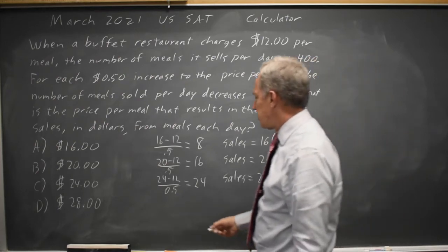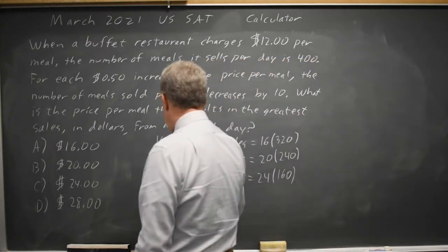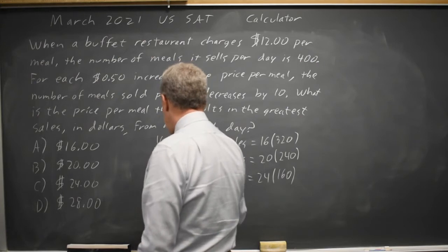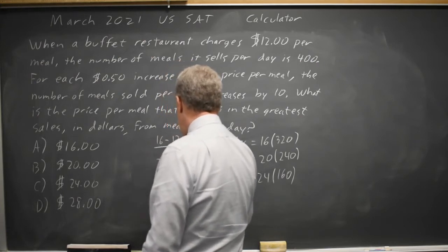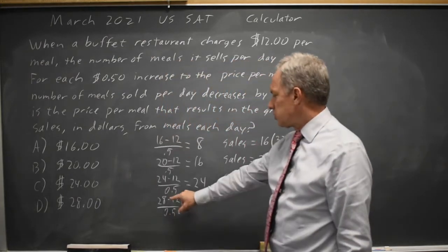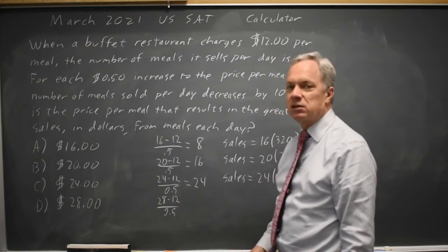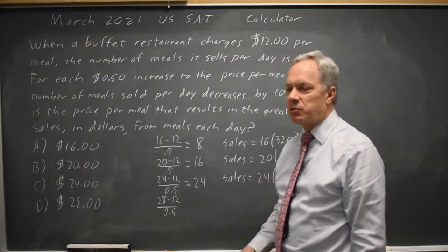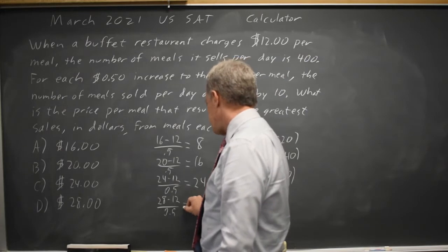And at $28, we have 28 minus 12 over 0.5. That is 28 minus 12, which is 16, divided by 0.5 — the same as multiplying by 2.